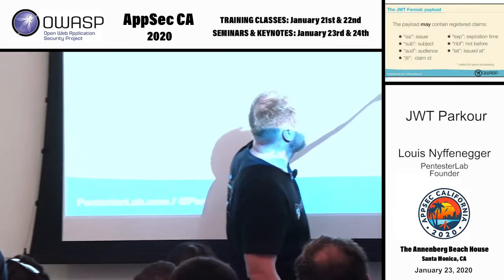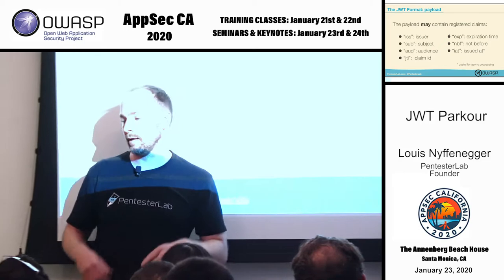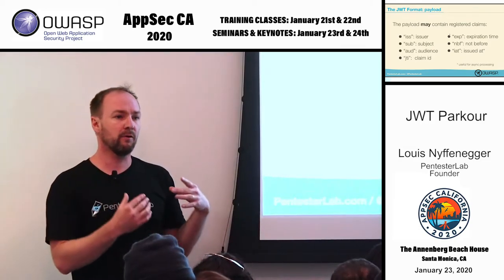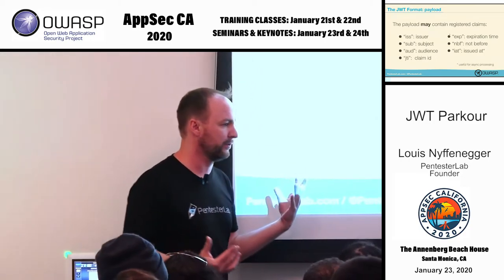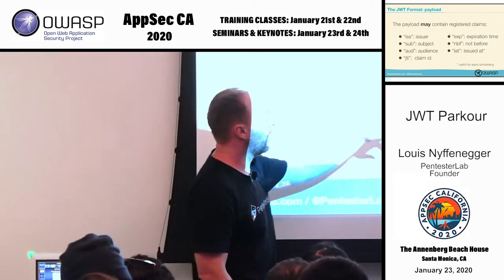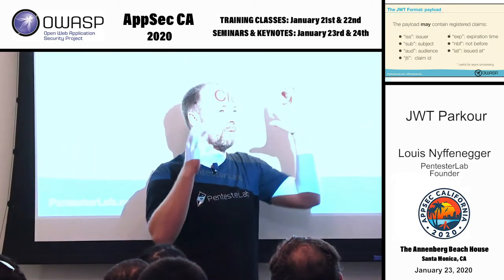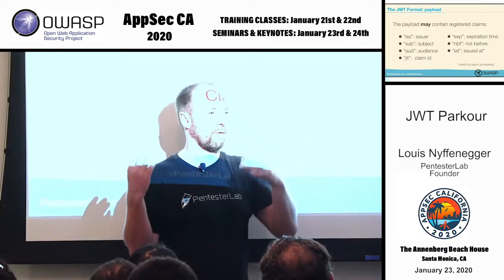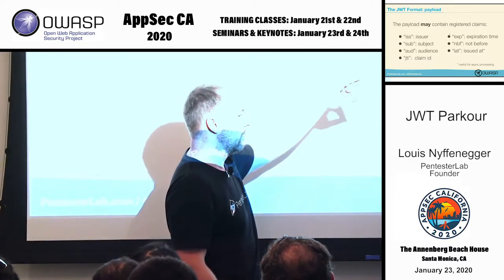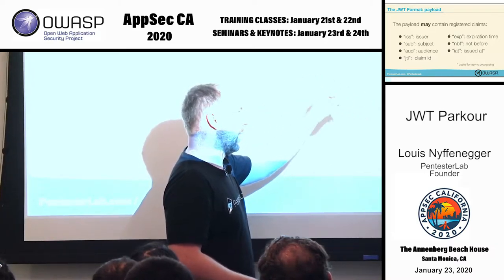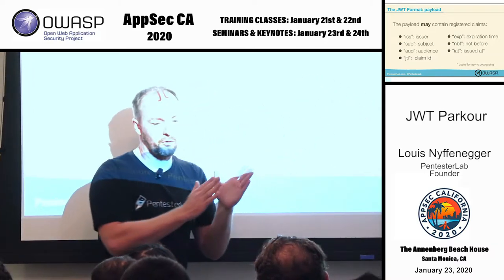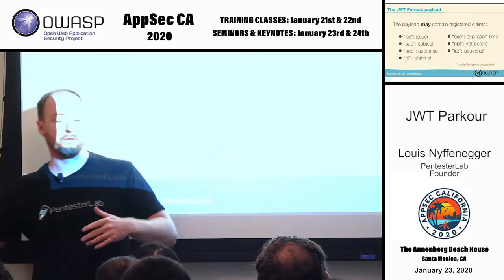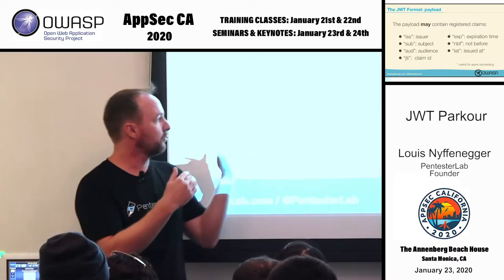Why do we have both expiry and issuer? If you have multiple microservices and one is asynchronous and takes five days to process tokens, using only expiry means your token lasts five days everywhere. With issuer, you can say 'I issued the token at this point in time,' so one microservice trusts it for two hours and another for five days. That's why it's good to mix them.